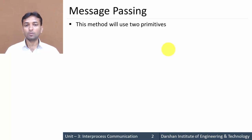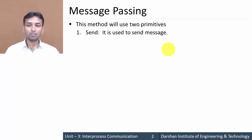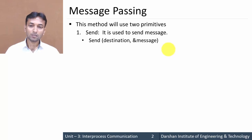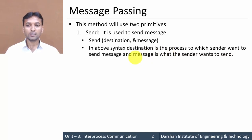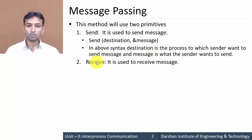The first primitive is 'send', which is used to send a message. The syntax of the send primitive is: send(destination, message), where destination is the process to which the sender wants to send the message, and message is what the sender wants to send. The second primitive is 'receive', which is used to receive a message.